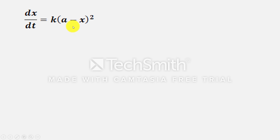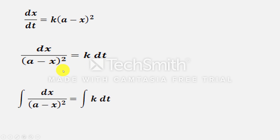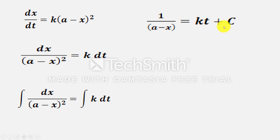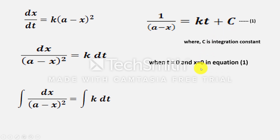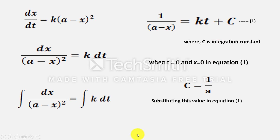Again, separating the variables and bringing (A−x)² to the other side, on integration we get: ∫dx/(A−x)² = k∫dt, which gives 1/(A−x) = kt + C. Let this be equation 1. To find the integration constant C, taking t = 0 and x = 0, substituting into equation 1 gives C = 1/A.